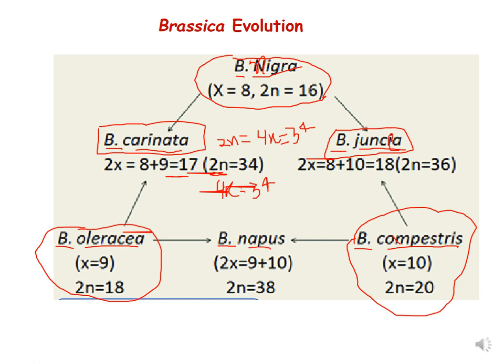The third cross between Brassica oleracea and Brassica campestris produced Brassica napus, again formed by hybridization followed by chromosome doubling, giving 38 chromosomes. To summarize: the three diploid species in circles gave rise to three tetraploid species shown in rectangles through the course of Brassica evolution.